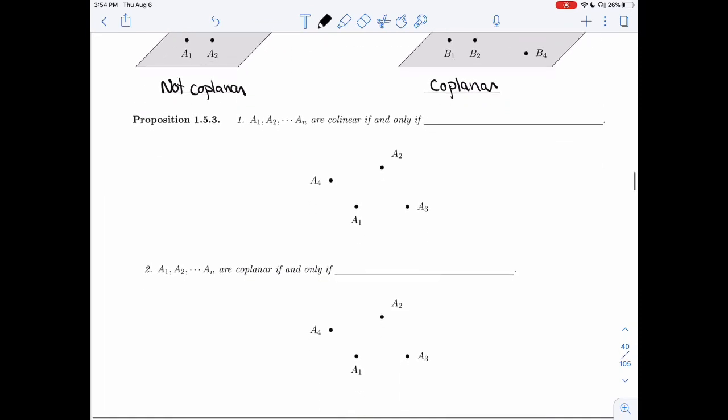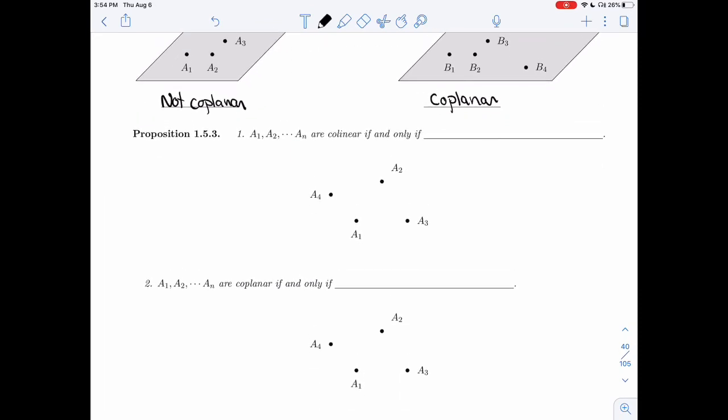All right. So we know how to test whether vectors are collinear and coplanar. And now we want to know how to use this for the points. Well, if you look at these points, they're going to be collinear if the vectors that I form from A1 to all of them, if these vectors are collinear as well. So if A1A2, A1A3, A1AN, so all the vectors I get from A1 to all of the other ones are collinear.